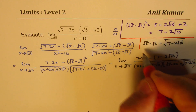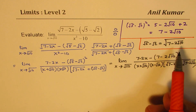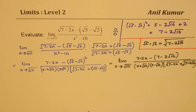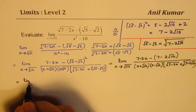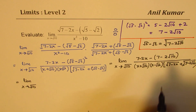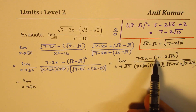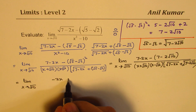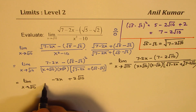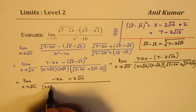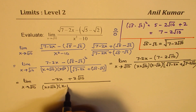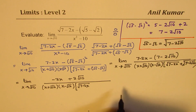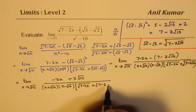We are going to insert square root of 10 for x, so it makes sense to make this substitution. The numerator becomes: 7 and 7 cancel, so we have minus 2x plus 2 square root of 10, over x plus square root of 10 times x minus square root of 10, within brackets square root of 7 minus 2x plus square root of 7 minus 2 square root of 10.